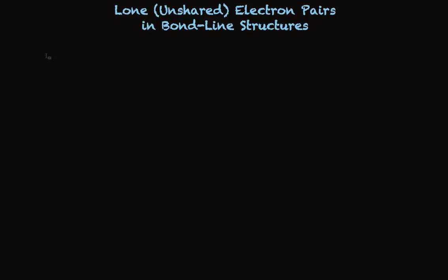It's easiest if we understand a couple of rules about bond line structure convention for writing structures. One of the rules is they always show formal charges. And the second is they may or may not show lone electron pairs.